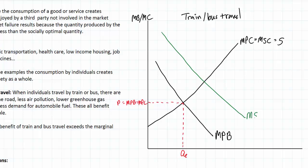Society as a whole benefits more than the individual travelers, so the marginal social benefit (MSB) curve lies above the marginal private benefit (MPB) curve. At the equilibrium quantity QE, the private benefit is read from the MPB curve, but the benefit to society is greater by the vertical distance between the MPB and MSB curves — this represents the size of the external benefit to society as a whole.